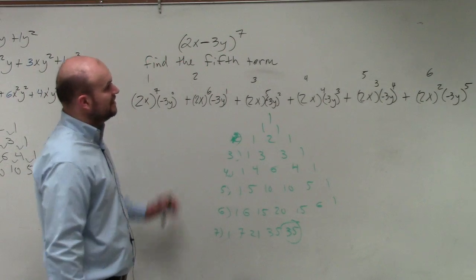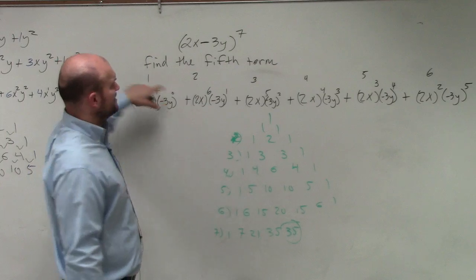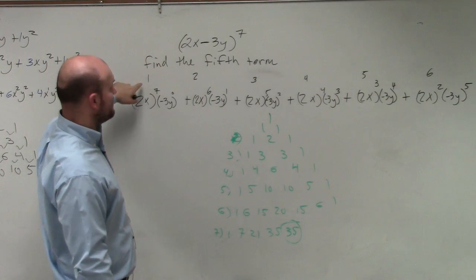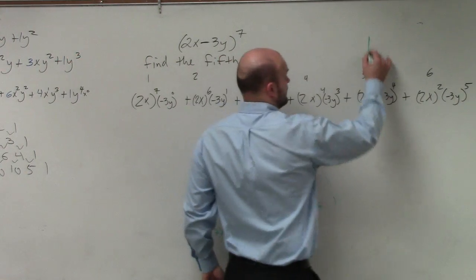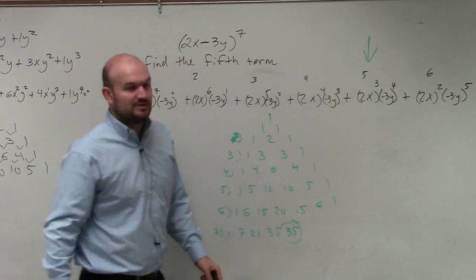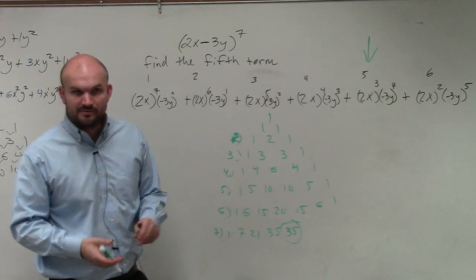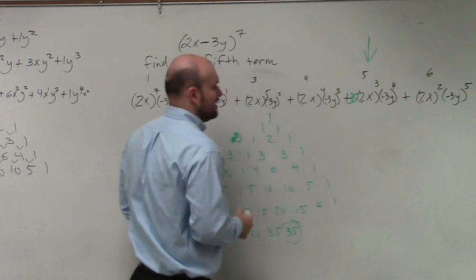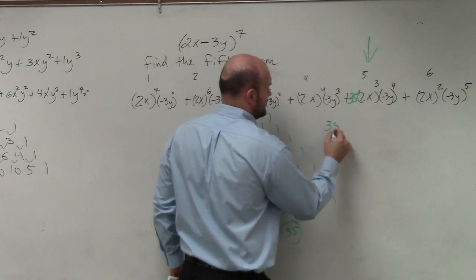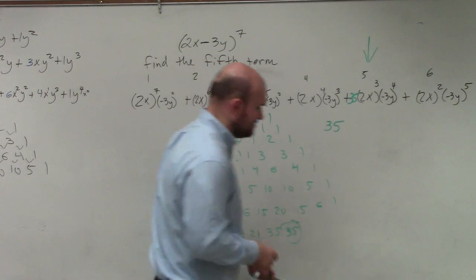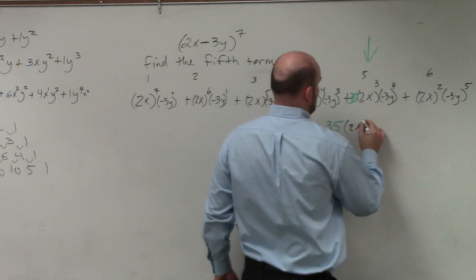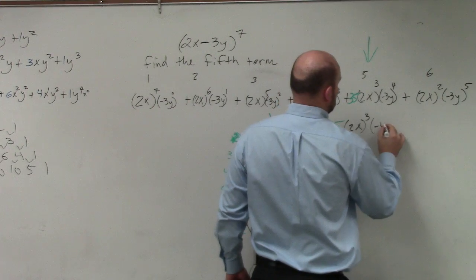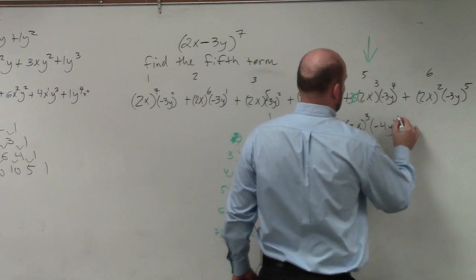So therefore, 35. Oh, why did I do 6? I don't know why. I guess I was thinking 7. So my fifth term is right here. And then what should I multiply that term by? What should the coefficient be? 35. So then you multiply by 35. So basically, I have 35 times 2x cubed times negative 4y to the fourth.